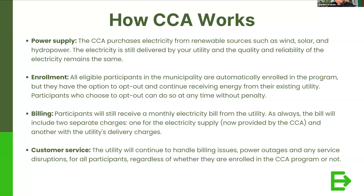In terms of billing, you still get your monthly bill from the utility. You're going to have your supply charge and your delivery charge, and the only thing that changes on your bill is that the line item for supply will now be provided by the CCA at a fixed rate. The utility continues to handle any billing issues, power outages, or service disruptions for all participants, regardless of whether or not they're in a CCA program. Nothing changes on that front.